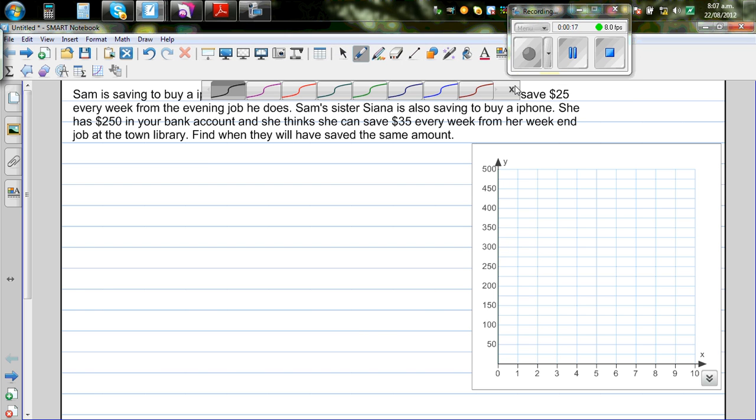Sam is saving to buy an iPhone. He knows he has $300 in his bank. He thinks he can save $25 every week from the evening job he does. Sam's sister, Sienna, also is saving to buy an iPhone. She has $250 in her bank account and she can save $35 every week from her weekend jobs at the town library. Find when they will have saved the same amount.